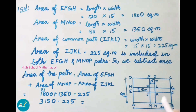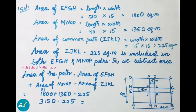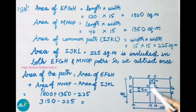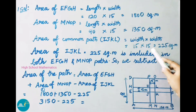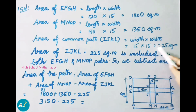Let us find the area of the common path, that is IJKL: width into width, 15 meters into 15 meters, that is 225 square meters.